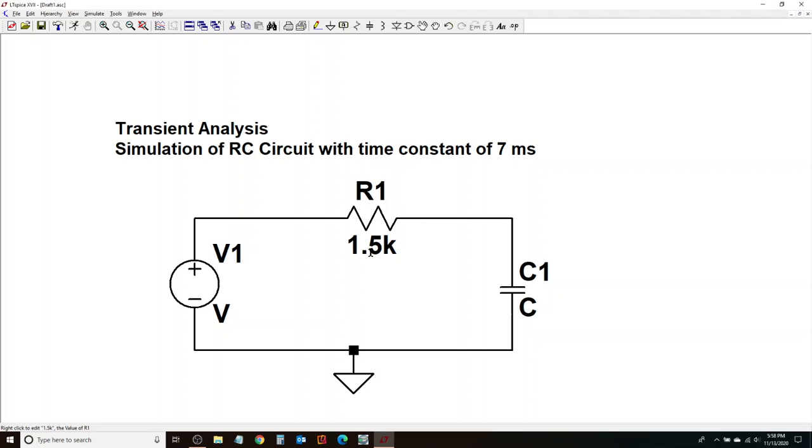Now, given that I have arbitrarily chosen R1 to be 1.5k, that leaves me with a capacitor to be 4.7 micro. So I would enter 4.7u for the value of C1. So that should give me the time constant of 7 milliseconds. And later in this video, we will verify whether it comes out to be 7 milliseconds or not.